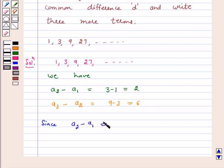Since A2 minus A1 is not equal to A3 minus A2, therefore the given list of numbers does not form an AP.